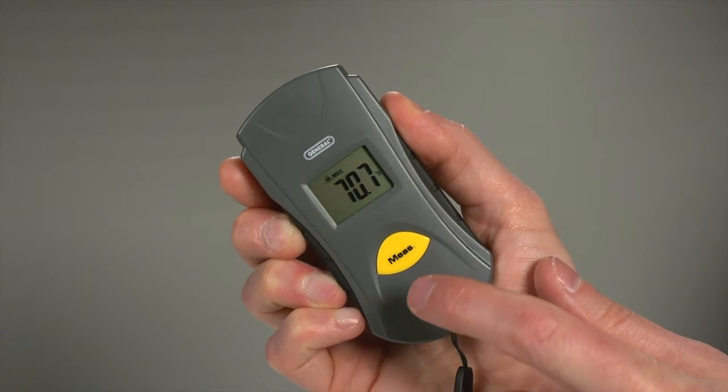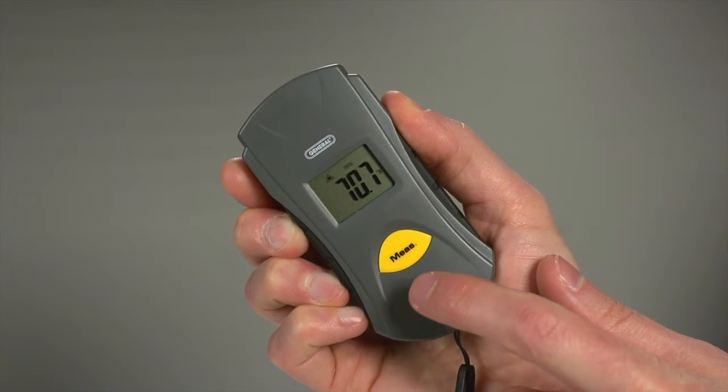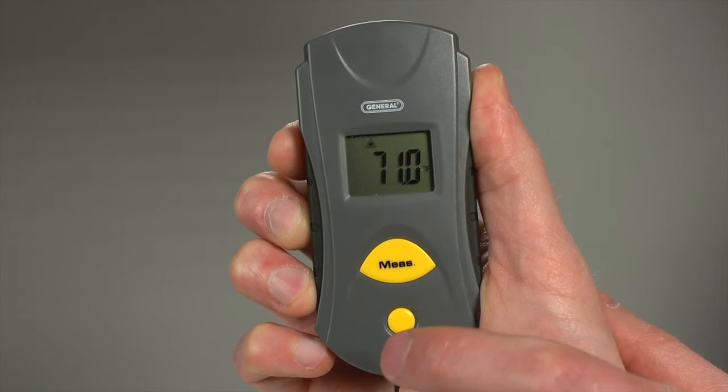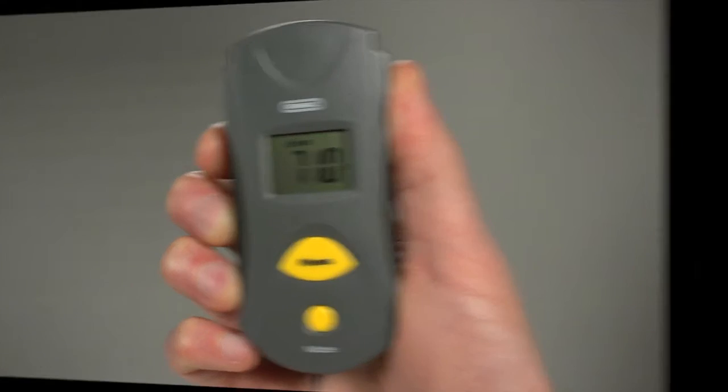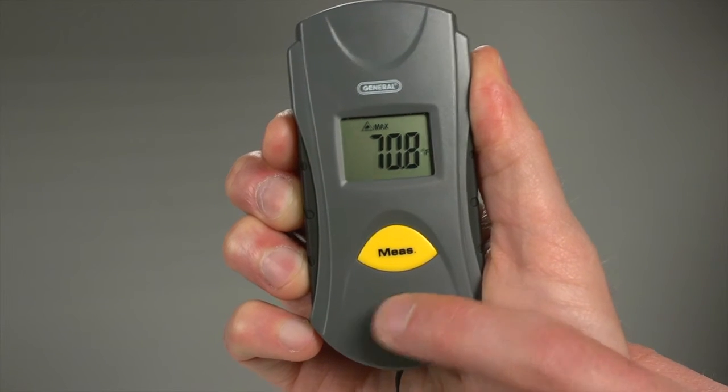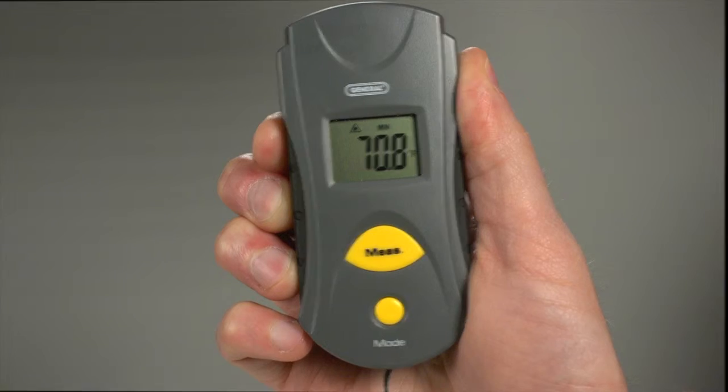There's more you can do. The mode button provides five advanced functions. Press once to enter max mode. Display maximum temperature recorded during one session as shown. Press mode twice to enter min to display minimum temperature recorded during a session.